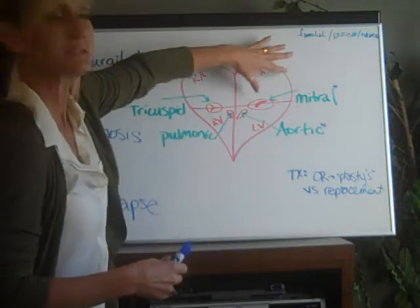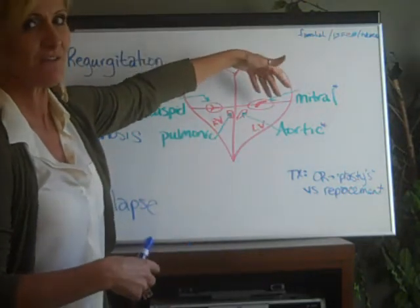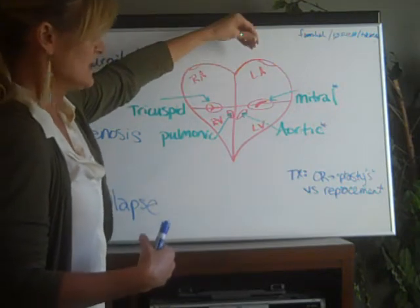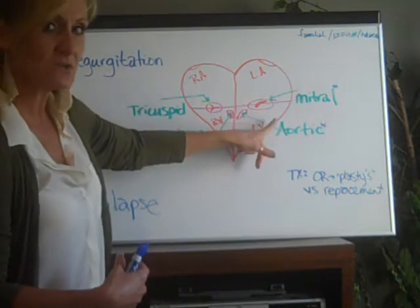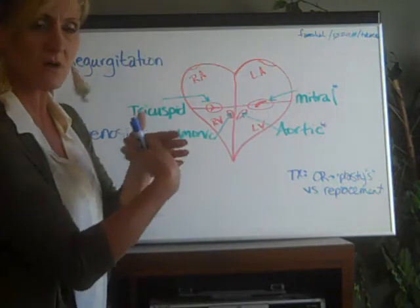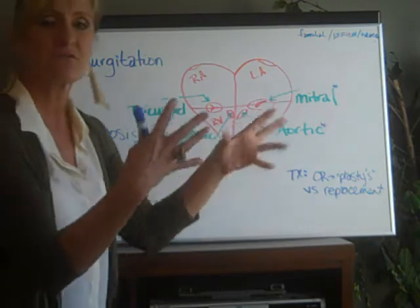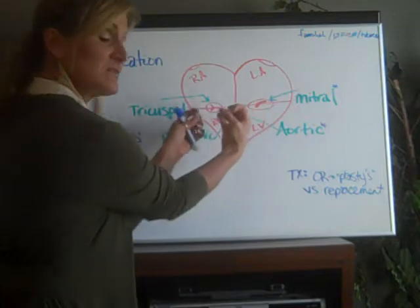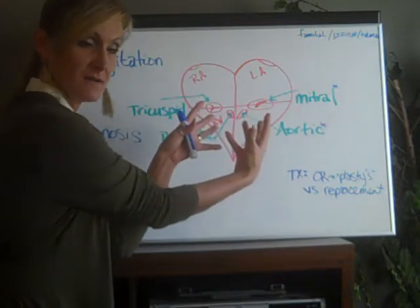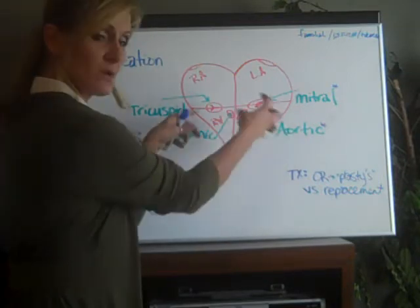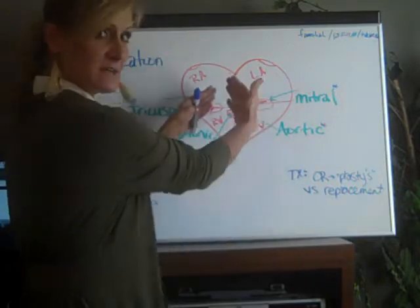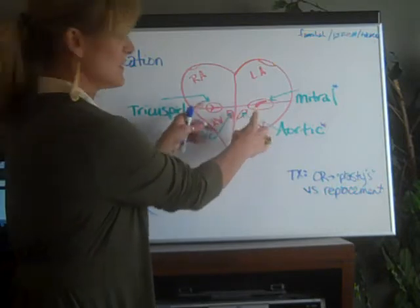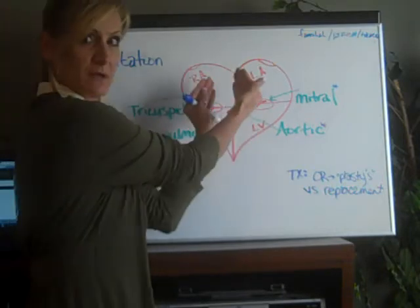The lungs dump the blood back into the left atrium — there's not really a valve there, it works on gravity. Then between the left atrium and left ventricle you have the mitral valve. During systole the pulmonic and aortic valves are open so blood can be ejected, while the mitral valve is closed so blood isn't going back up into the atrium.